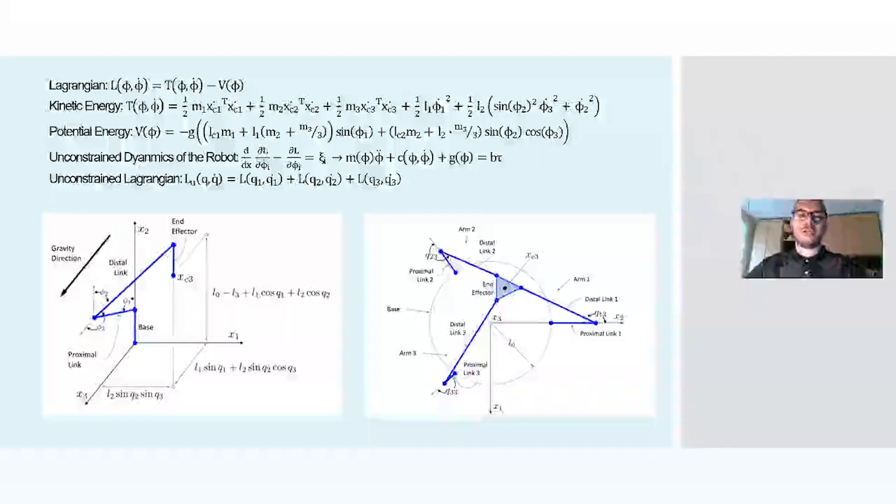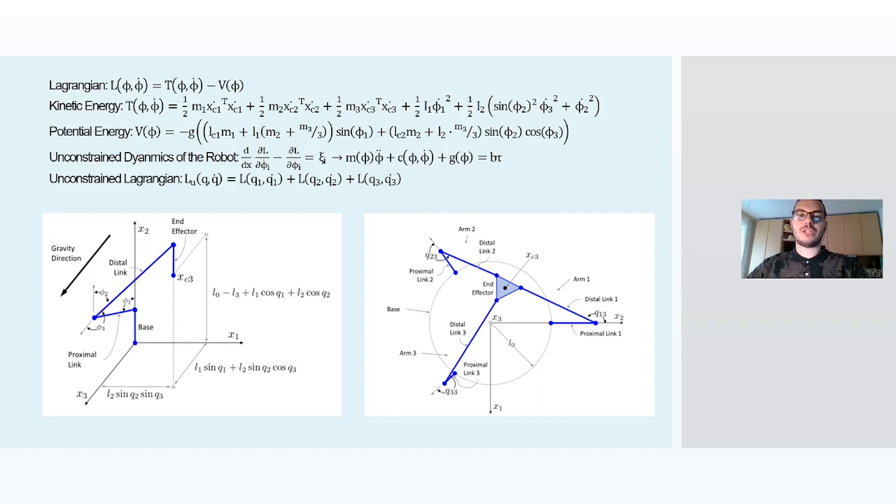My name is Andrea Colucci and I will explain the dynamics of the Delta robot. Firstly, we will introduce the Lagrangian. In it, there are two contributions. The first contribution is given by the kinetic energy, and the second contribution is given by the potential energy.